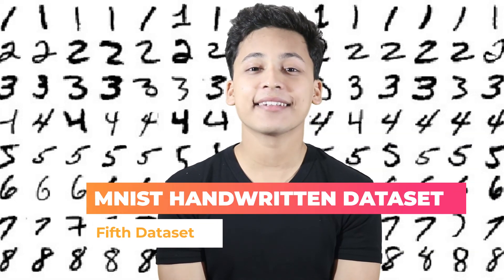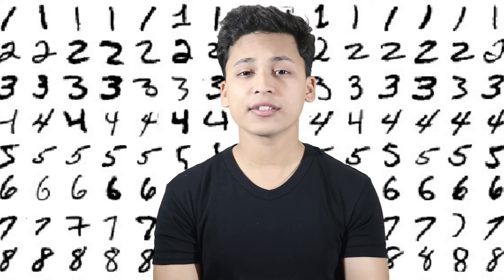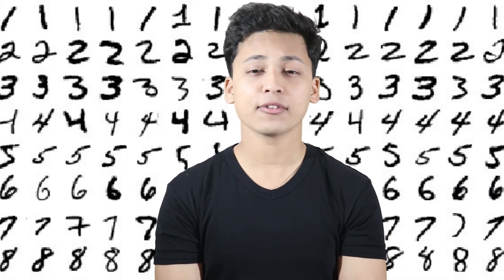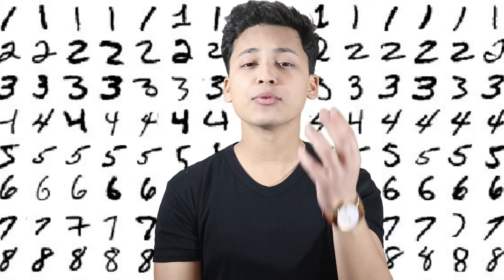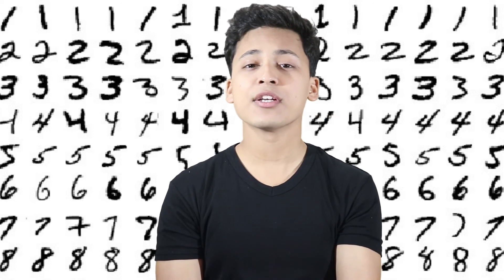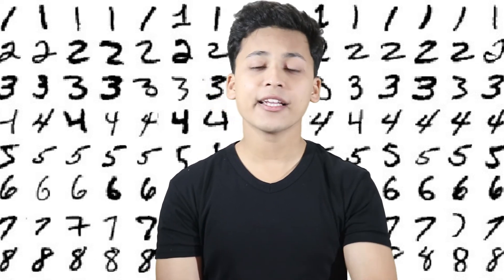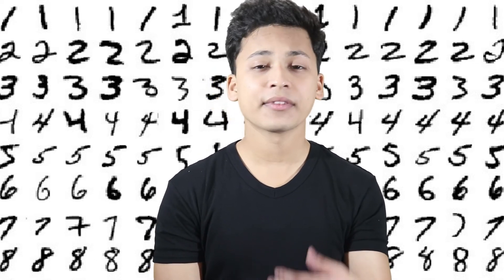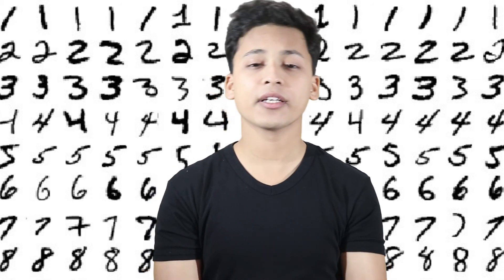The last one I would suggest is the MNIST Handwritten Dataset classification. This dataset has handwritten figures of digits 0 through 9. Your task is to train on those images — which are stored in a structured format — and understand how each digit looks, then pass a matrix and identify whether that matrix represents a five, a six, a one, or any other digit.